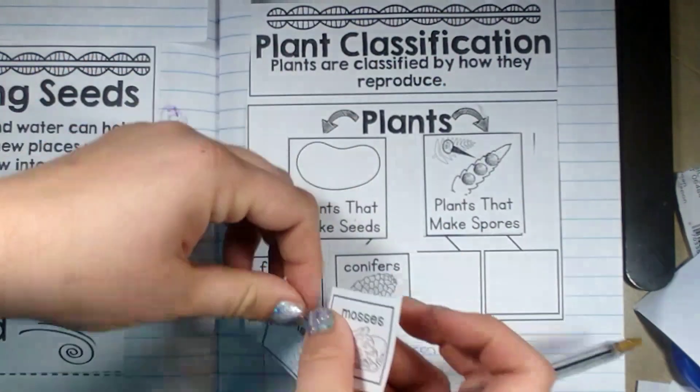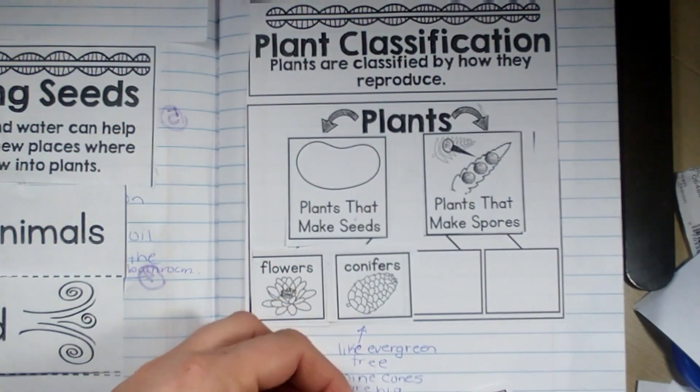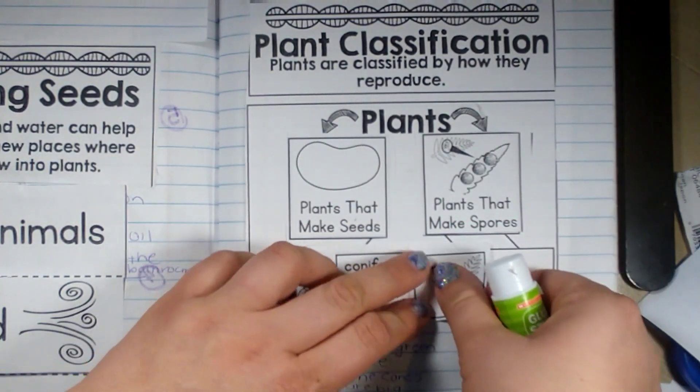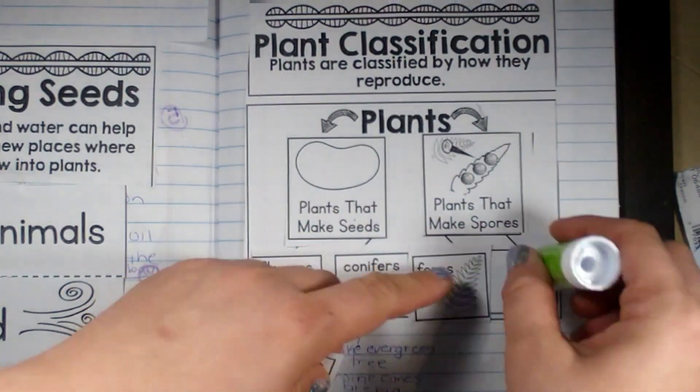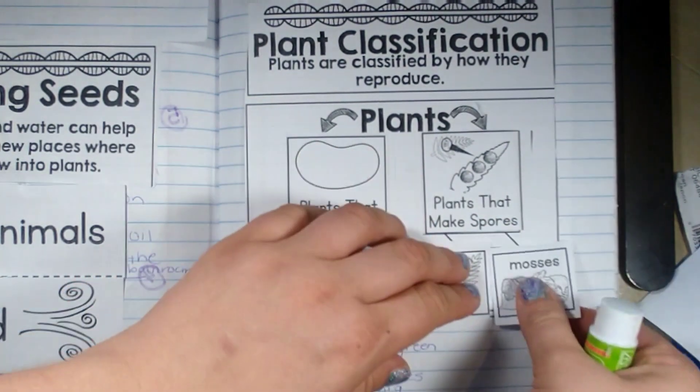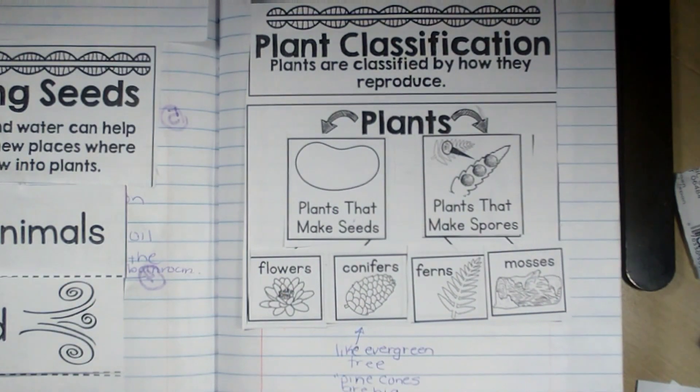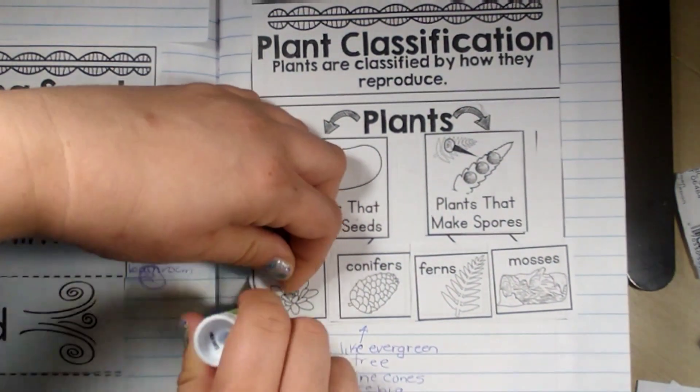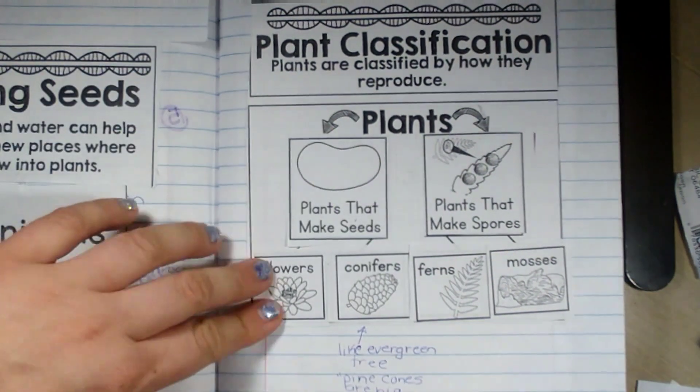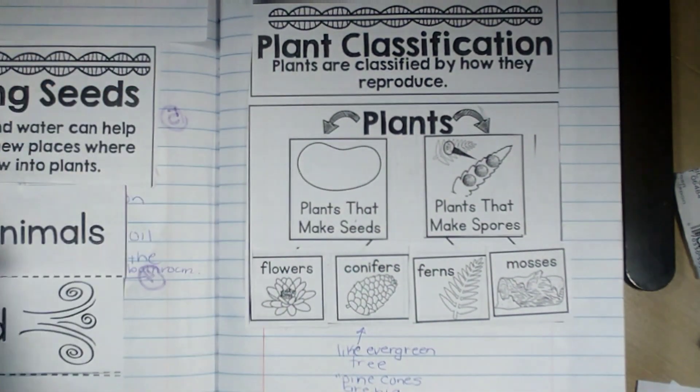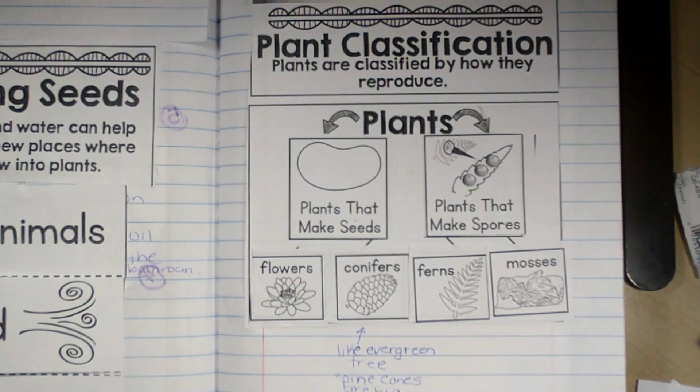The other ones that make spores are ferns and mosses. Mosses are the things that grow on other plants. We have Spanish moss in Florida. It's the ones that hang from the trees. They're gray.